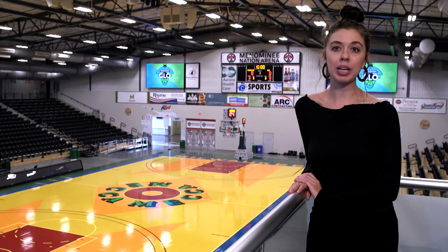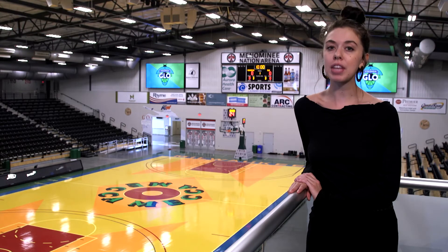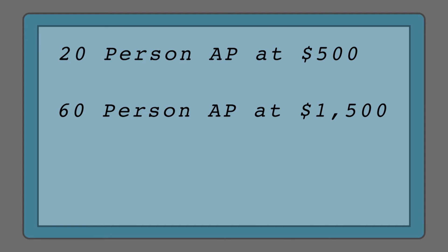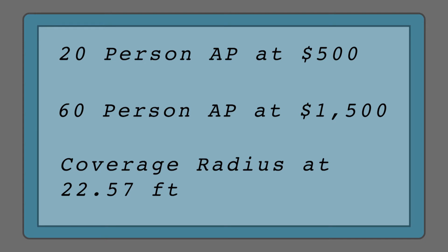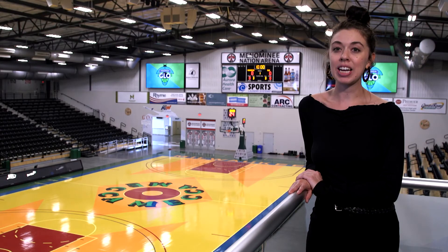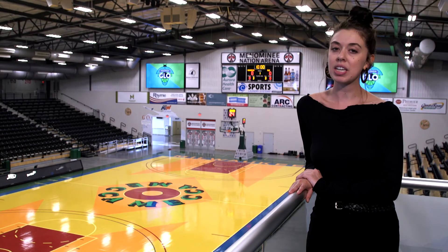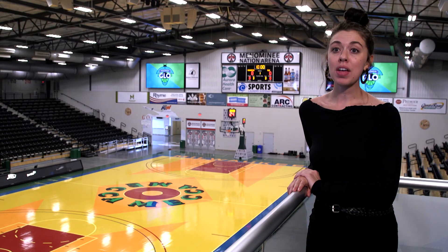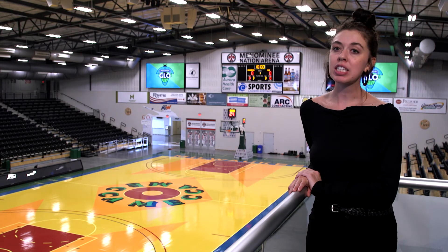Menominee Nation Arena provided a project budget of $40,000. The two AP options include a 20-person AP at $500 or a 60-person AP at $1,500. Both contain a coverage radius of 22.57 feet. Given this information, it is your job as a consultant to identify the best option while staying within the budget. The best answer is the one that is the most cost-efficient for the greatest number of users.